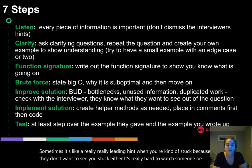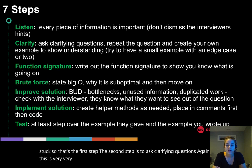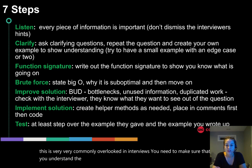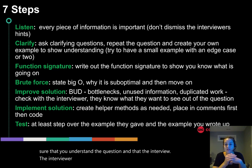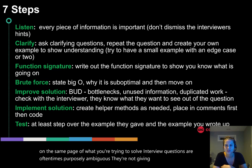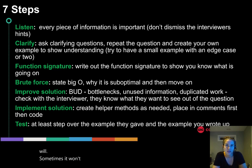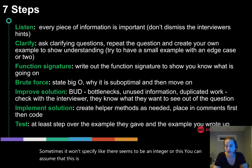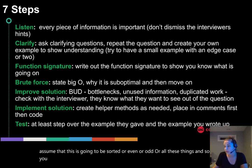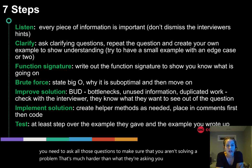The second step is to ask clarifying questions. This is very commonly overlooked in interviews. You need to make sure you understand the question and that you and the interviewer are on the same page about what you're trying to solve. Interview questions are often purposely ambiguous — they're not giving you function signatures, examples, or specifying whether inputs are integers, sorted, or even versus odd.